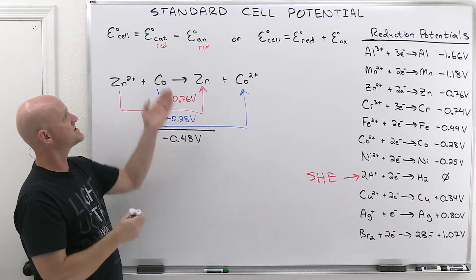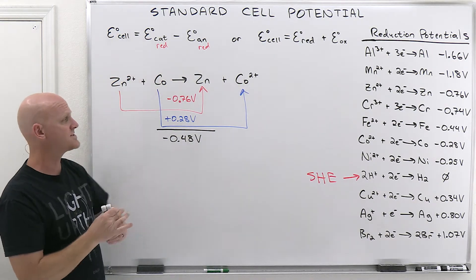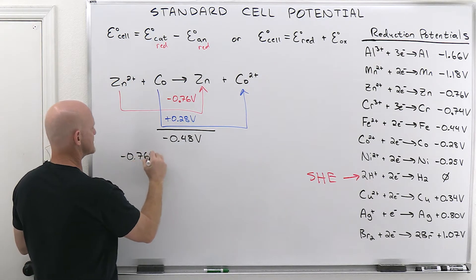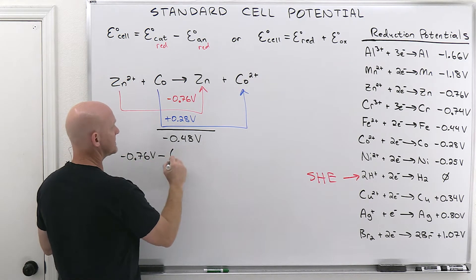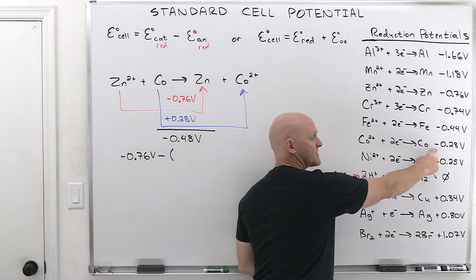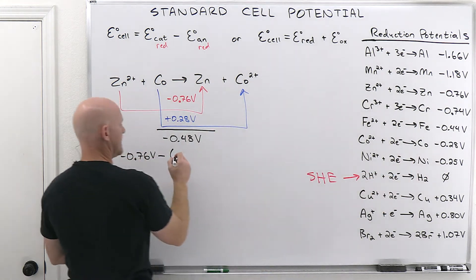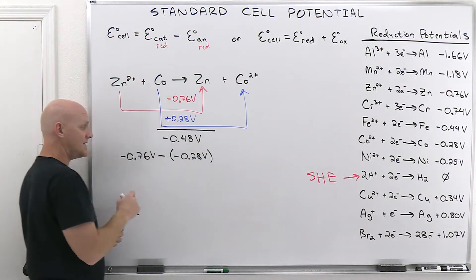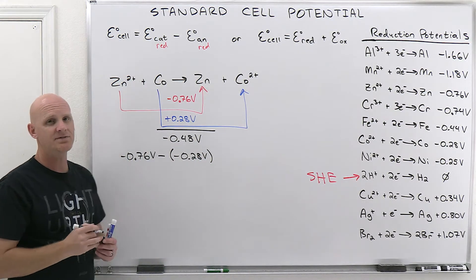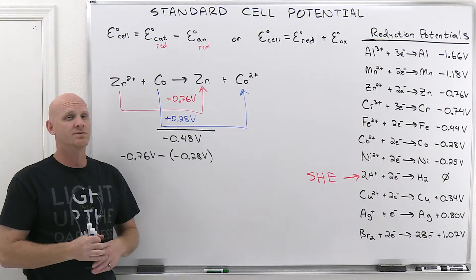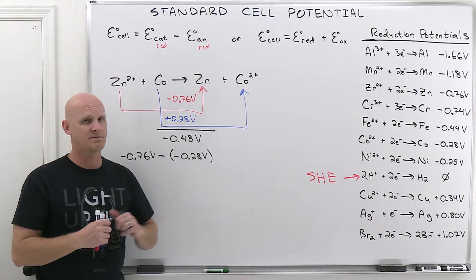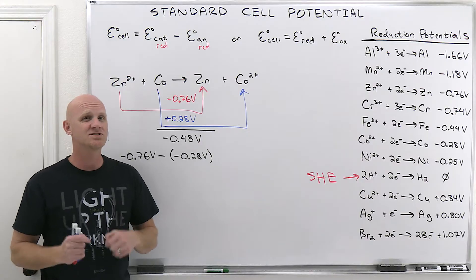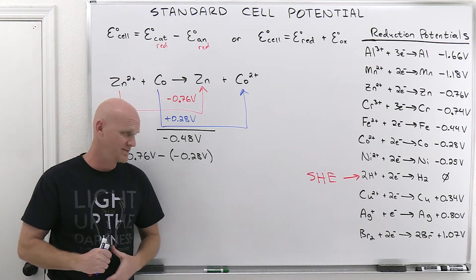Notice: had you used cathode minus anode without changing the sign yourself, you'd have −0.76 minus (−0.28) = −0.48 volts — the same answer. So if you change the sign yourself, add it in. If you don't change the sign yourself, then subtract. But don't change the sign AND subtract.